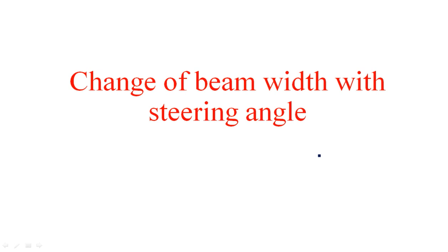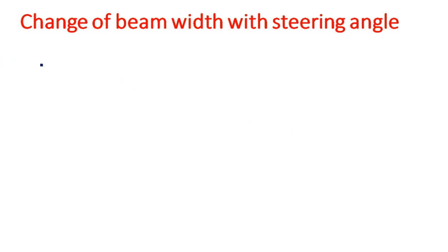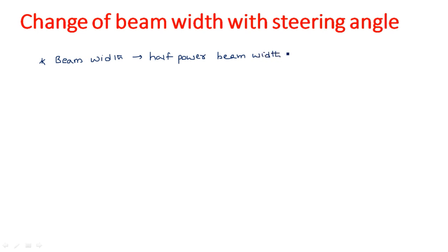In this video, I am going to explain the relation between beam width and steering angle. Beam width is nothing but half power beam width. Steering angle is the angle at which the radiation pattern is going to be transmitted into free space, or the angle at which the radiation pattern is going to be received into the phased array antennas.